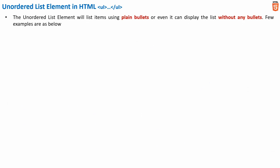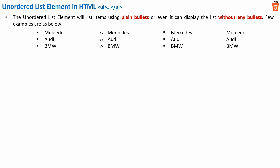The unordered list element will list items using some plain bullet, or it can display the list without any bullet. A few examples of the unordered list element in HTML are shown here. We have four examples. In the first example the list item marker is a disk, in the second it is a circle, in the third it is a square, and in the fourth case no bullet is displayed. All four combinations are possible with the unordered list element in HTML.